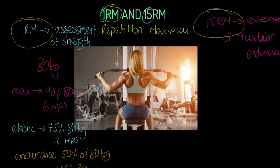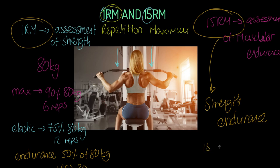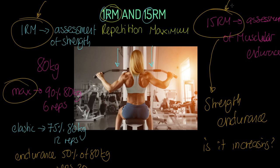The 15RM can be manipulated in exactly the same way, but we will only use it for strength endurance. The key thing with the 15 rep max is: is it increasing? It's very common for people in the gym to be increasing their max strength or power, but can they lift a lighter weight for longer? People often miss out on this factor because they focus on the one rep max and don't utilize or measure the 15RM at all.